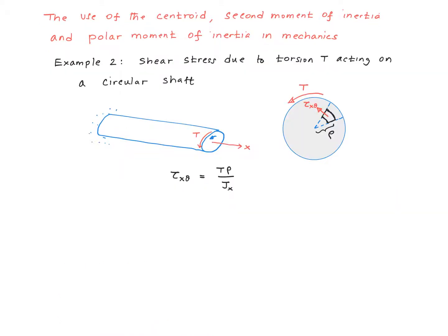Finally, an example illustrating the use of the polar moment of inertia. Supposing we have a cylindrical shaft subjected to a torque T like shown in this picture. The torque T produces a shear stress tau_x_theta on the plane of the cross-section perpendicular to the x-axis — that is, the shear stress on the x-plane in the hoop direction theta. We can calculate tau_x_theta using the torsion formula: tau_x_theta equals T times rho over Jx, where rho is the radius of the point from the center of the circle. Jx is the polar moment of inertia of the circle about the x-axis.